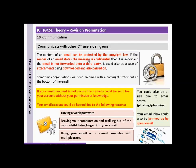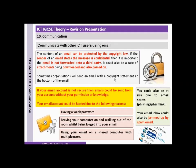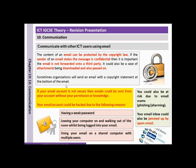The content of an email can be protected by copyright law. If the sender of an email states the message is confidential, then it's important the email is not forwarded to a third party. This could also include attachments being downloaded and passed on. So if an email is protected by copyright law, you can't send the contents of that email to another person, including the attachment — for example, a personal document like a contract.